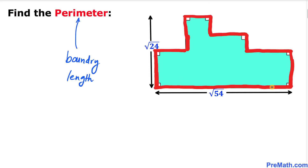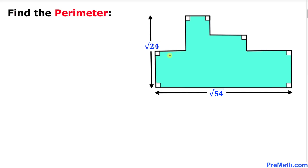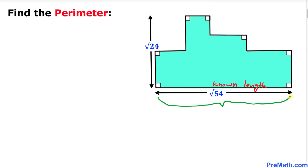In order to calculate this perimeter, we must know the length of each individual line segment — this one, this one, and all of them as you can see. This base length is the only length that we know.